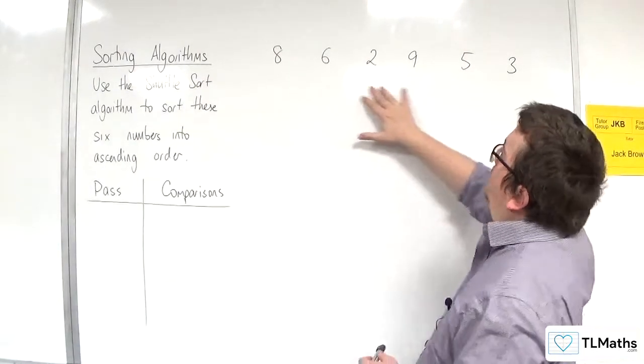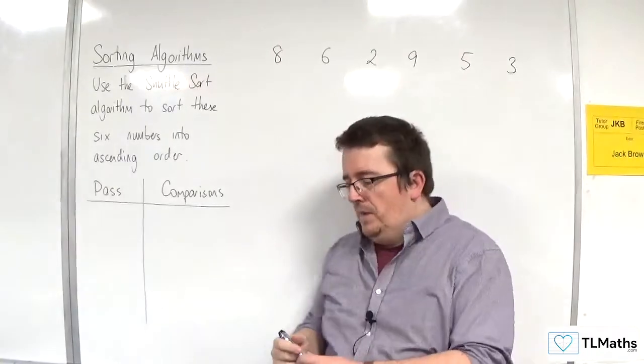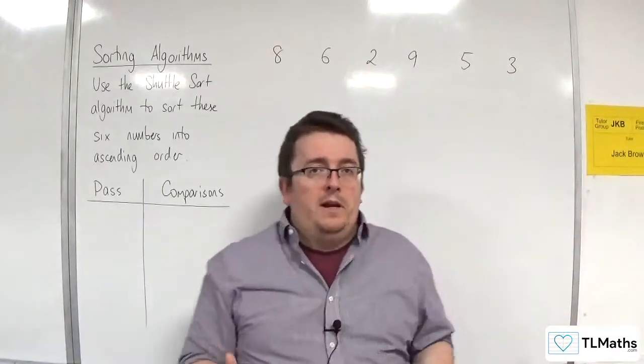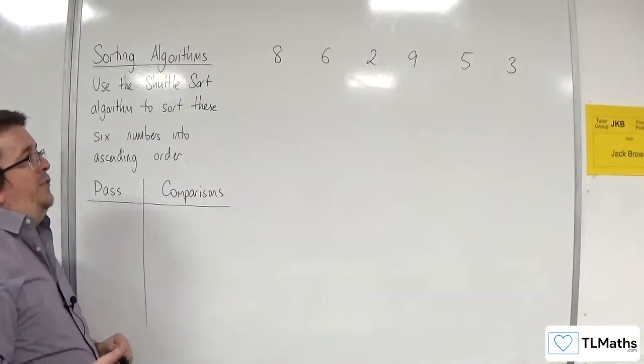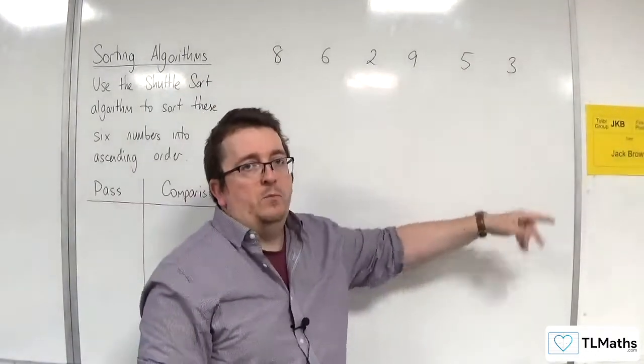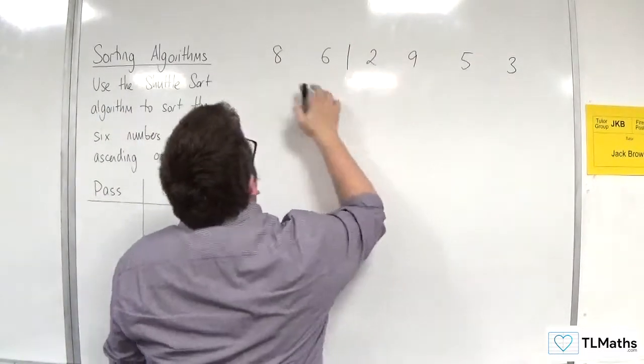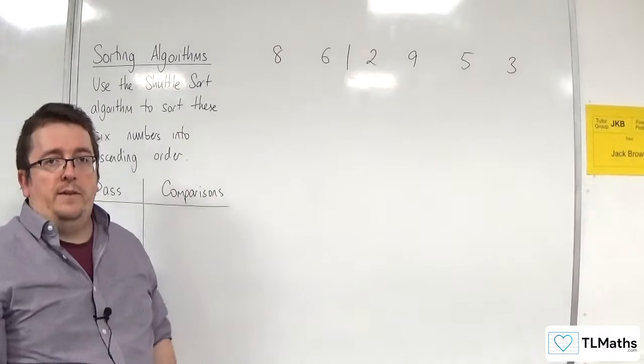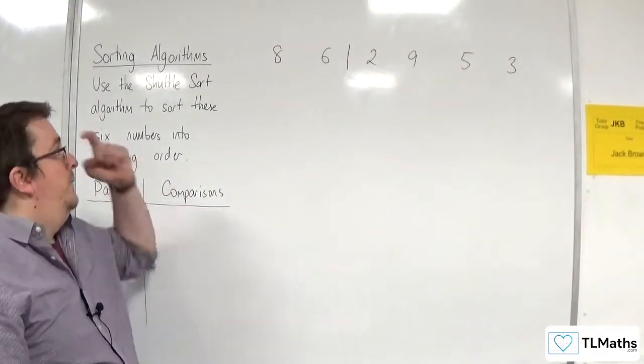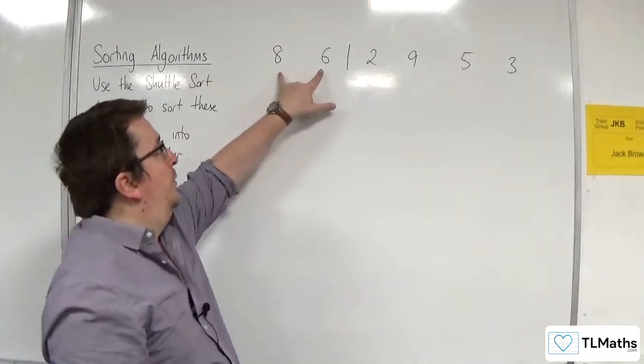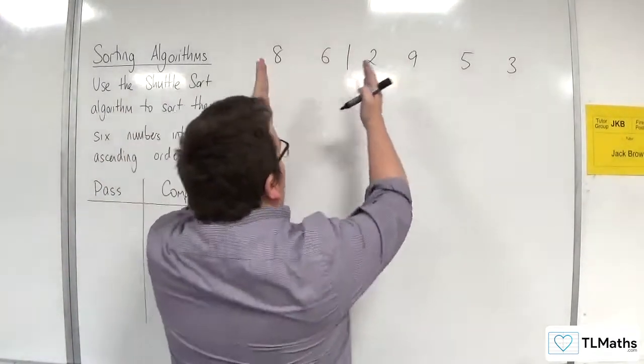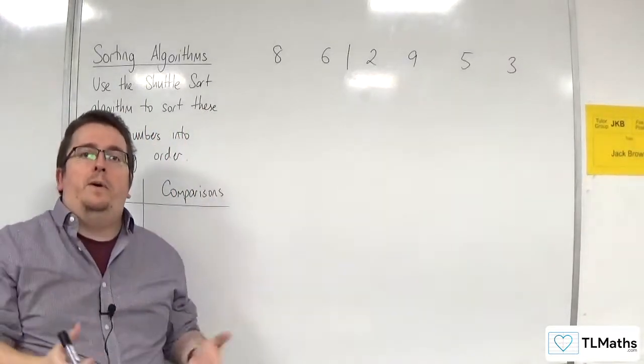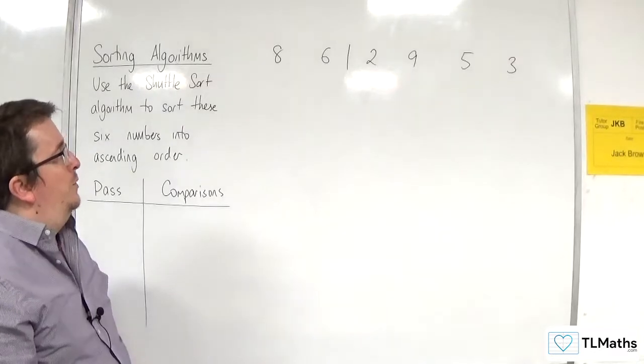We're going to sort these six numbers into ascending order, and we're going to record the number of passes and comparisons as we go. Shuttle Sort is quite similar to Bubble Sort, but instead of working your way all the way through the list in one pass, what you do at the start is you just focus your attention on the first two numbers. And each time we go down a pass, we're going to include another number into the list. The idea is that we, in each pass, sort these into correct order, then add in another number, sort those into correct order, then add another number in, then another, then the final number. And our final pass should sort them all into ascending order.